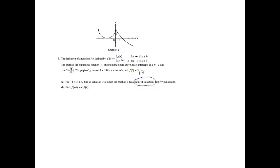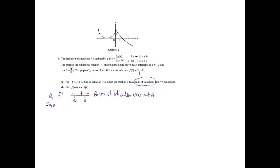Points of inflection — we want to look at f double prime. I'm going to make an f double prime chart. Going from f prime to f double prime, I'll be looking at the slopes. The slopes are negative until x equals negative 2, then positive until x equals 0, and then negative after that. So points of inflection occur at x equals negative 2 and x equals 0, because f double prime changes sign.